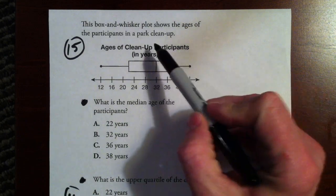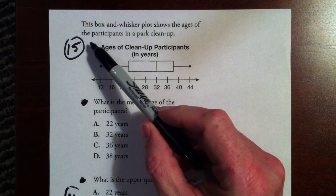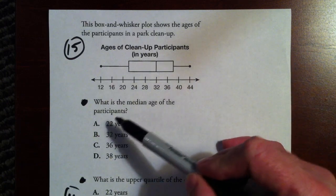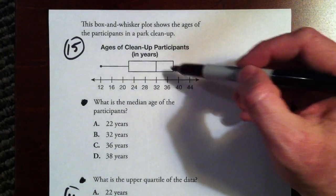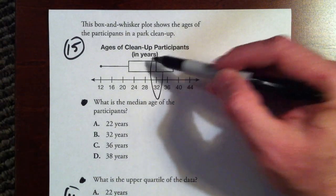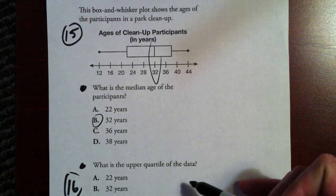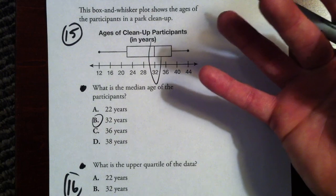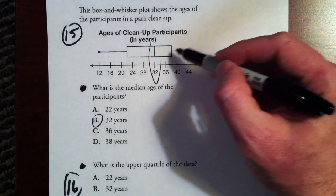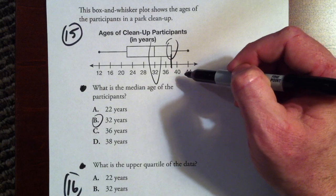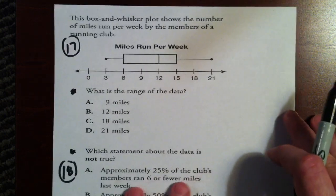The box and whisker plot shows the ages of the participants in a park cleanup. What is the median age of the participants? Well, in our box and whisker plot, our median is always this number that's inside this box here, which is 32. Second question, number 16, what is the upper quartile of the data? Well, remember, the upper quartile is the median of the second half of the data. And that is represented by this second part of the box right here. And that looks like it's right in the middle of 36 and 40, and that makes that 38.